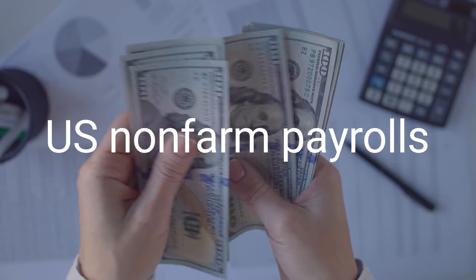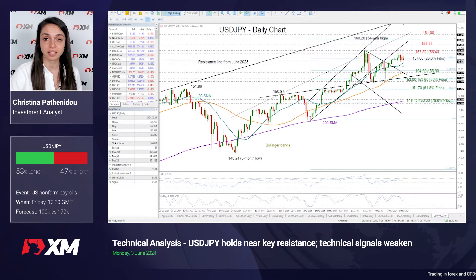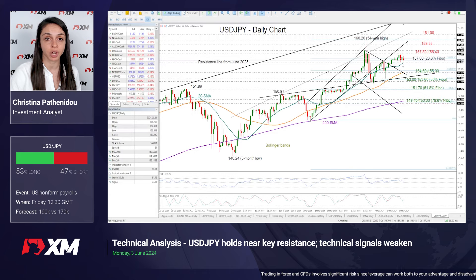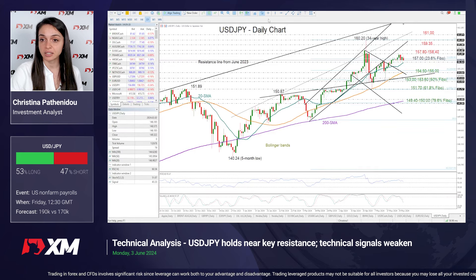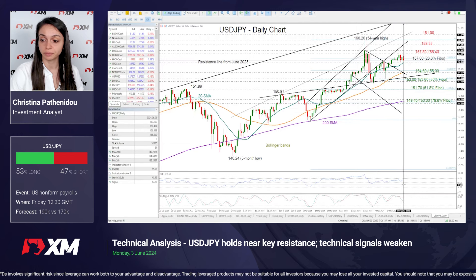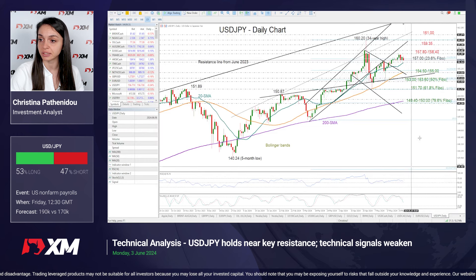Starting first with USDJPY and the U.S. Non-Farm Payrolls report, the wall forecast suggests a rebound in jobs growth and a steady unemployment rate, as well as stable average hourly earnings, which should be dollar positive. But looking at the technical indicators, we can see that the RSI and the stochastic oscillator are signaling lacking buying interest.